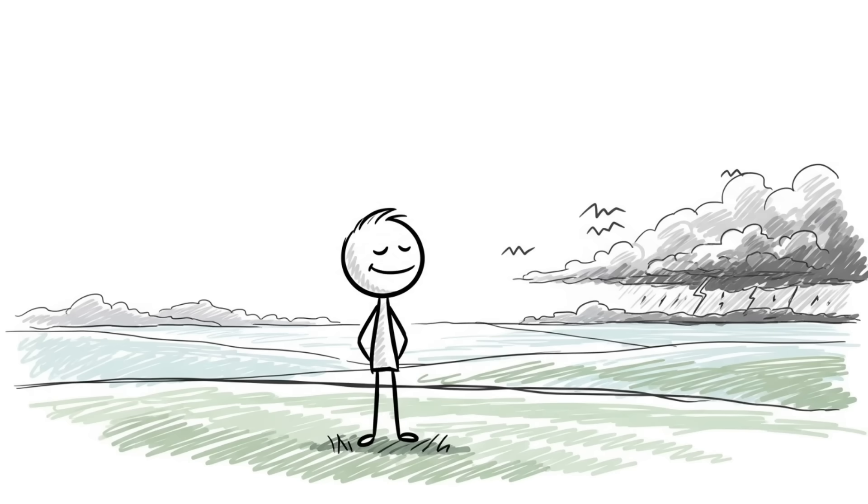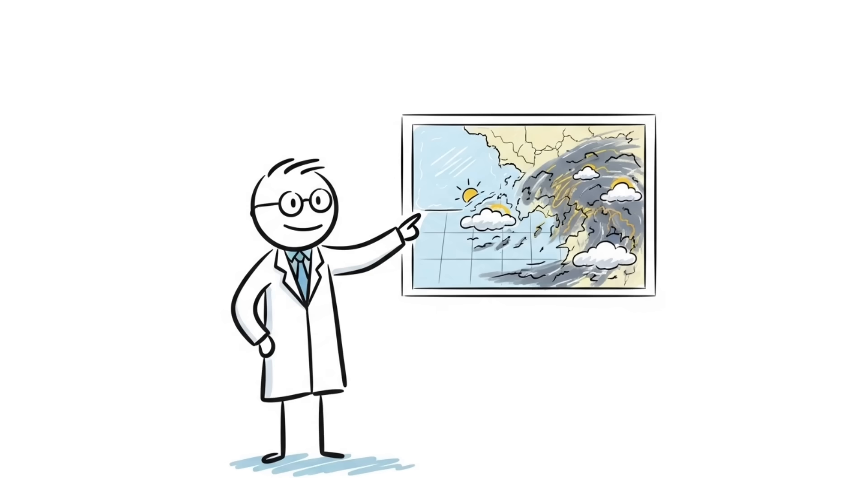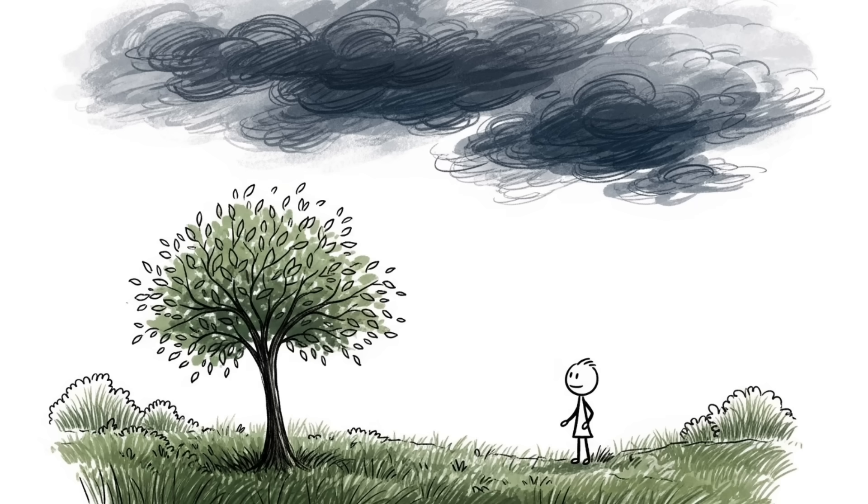Number 6. The calm before the storm is a real thing. The saying, the calm before the storm, sounds like something from a movie and people often use it metaphorically, but it's actually a real meteorological phenomenon. Just before a severe thunderstorm, there's often a period of eerie calm where the wind dies down and the air feels unnaturally still.